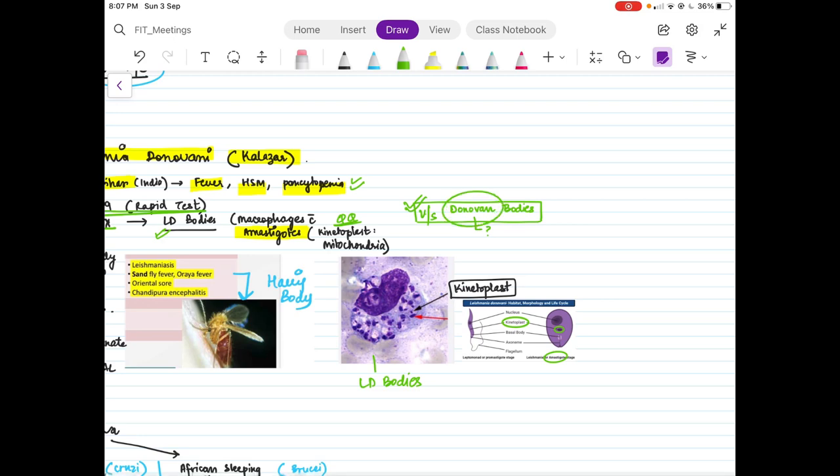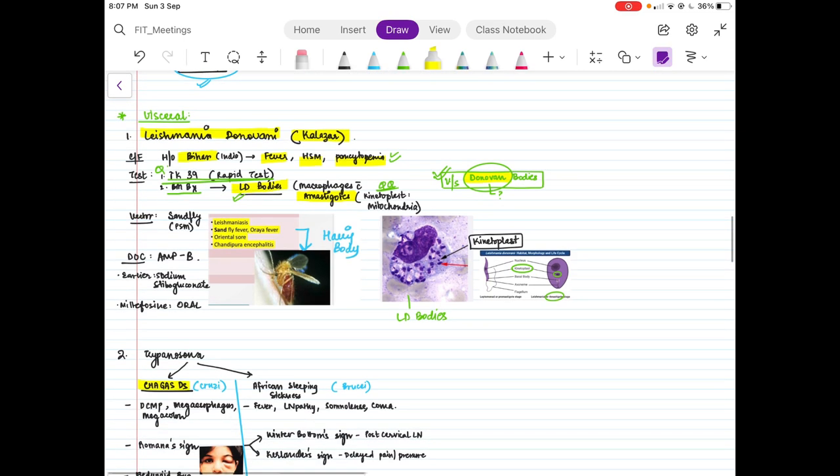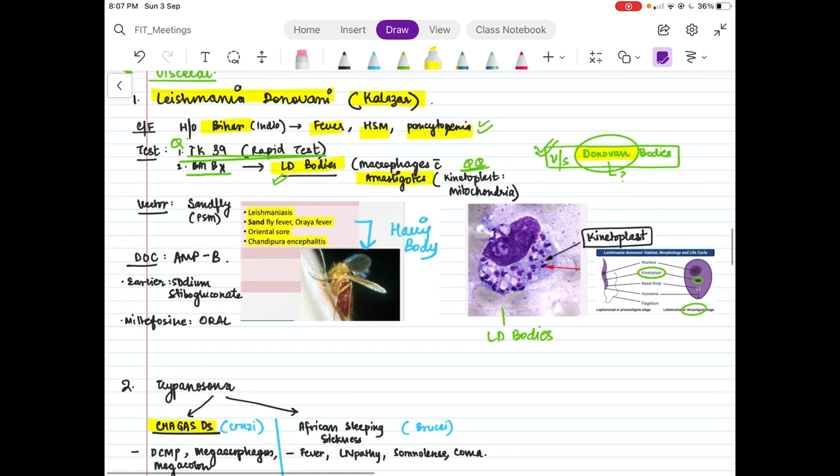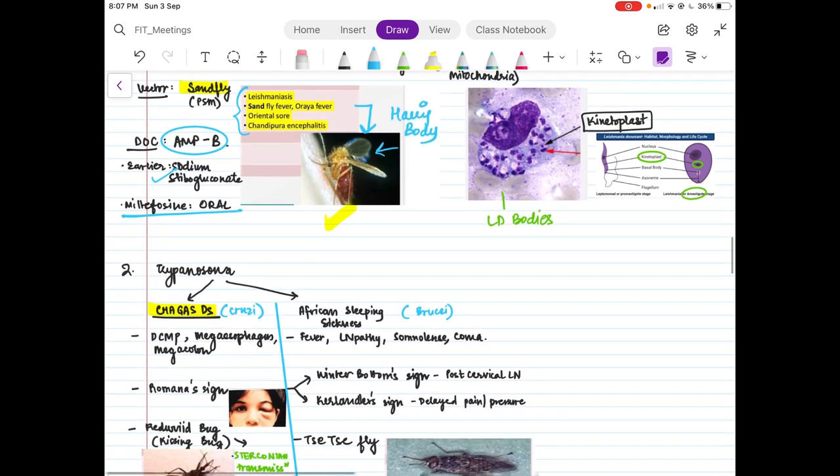The vector for Leishmania is sandfly. I have also put a PSM slide here which has basically the image. It is a PSM question. There you have hair on the body of sandfly, along with the other diseases which you need to know that is transmitted by sandfly. The drug of choice, as discussed above, is amphotericin B. Earlier we did use sodium stibogluconate, but because of resistance we shifted to amphotericin B. Miltefosine is the oral form, oral drug which is used for Leishmania.